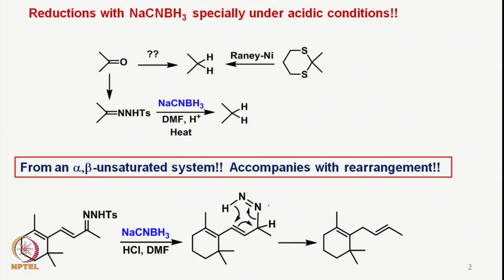We also studied sodium cyanoborohydride-based reductions. Since sodium cyanoborohydride is stable under acidic conditions up to pH 3, it was easy for carrying out reactions under acidic conditions. For example, we considered reductions of enamines, which are possible because protonation allows the formation of this type of intermediate where the proton comes in and the positive charge develops here.